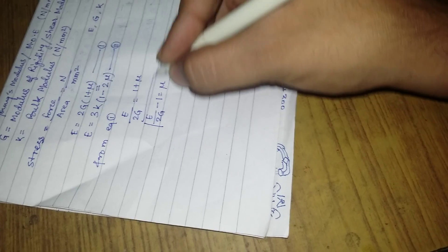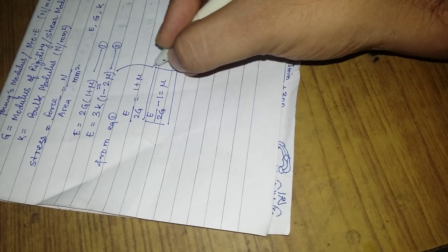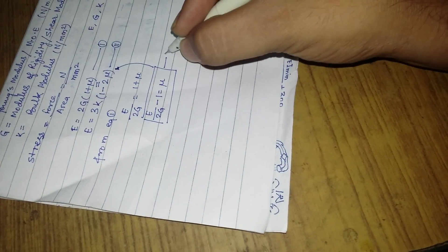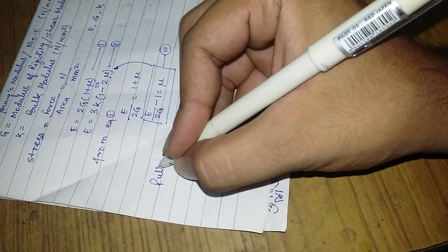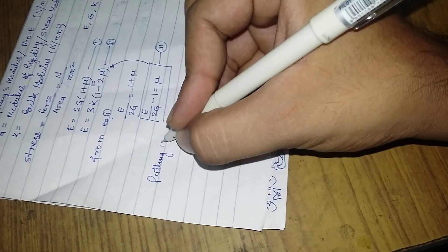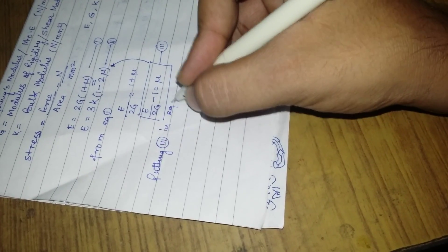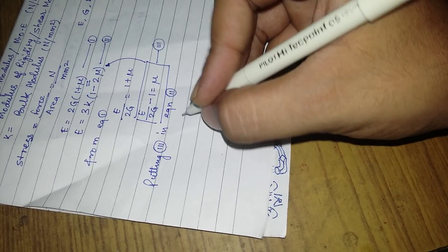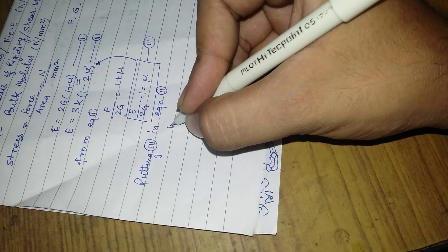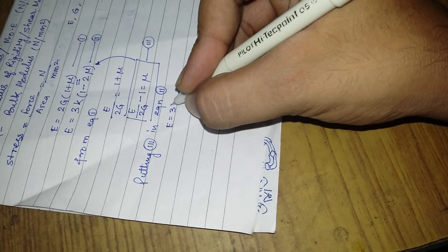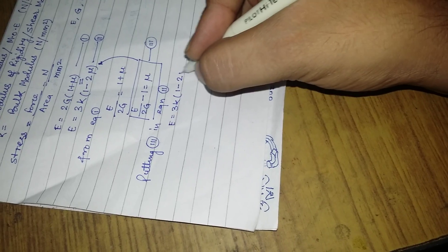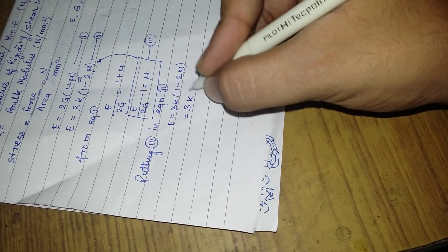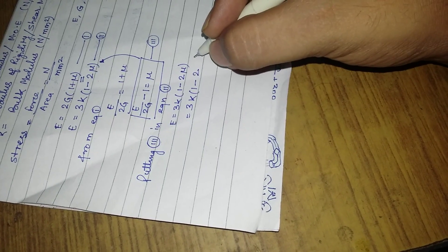We can put this value of μ in equation number 2. Putting equation 3 in equation number 2, we get E equals 3K(1 minus 2 times μ), which is 3K(1 minus 2E upon 2G) in place of μ.